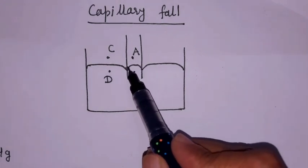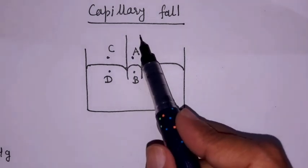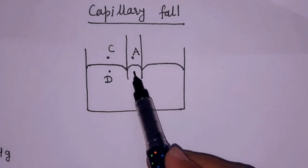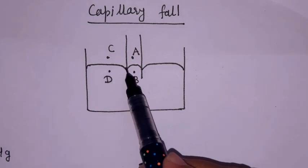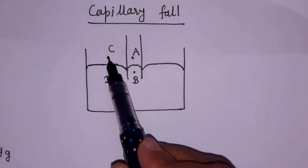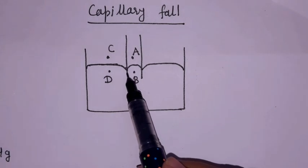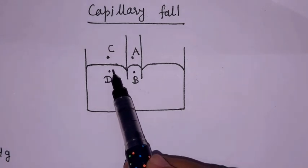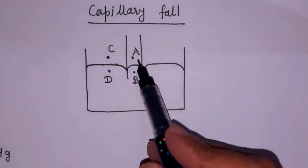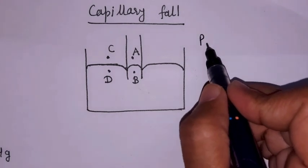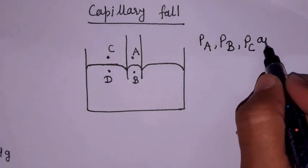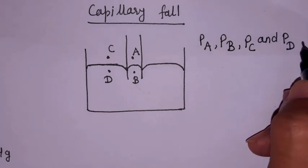Point A is just above the convex surface but inside the capillary. Point B is just below the convex surface inside the capillary. Point C is just above the convex surface but outside the capillary, where the middle surface is plain. Point D is just below the plain surface, outside the capillary, and exactly below point C.